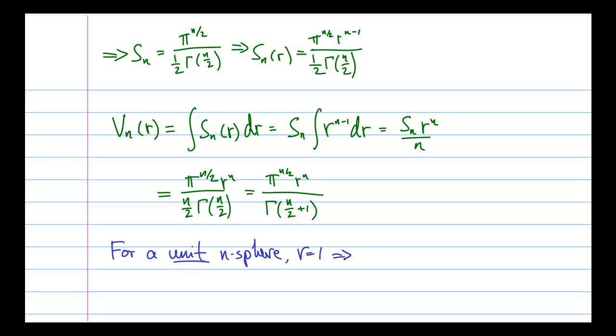And for a sphere of unit radius, we simply set r equals to 1, and so we get π to the power of n over 2 divided by the gamma function.